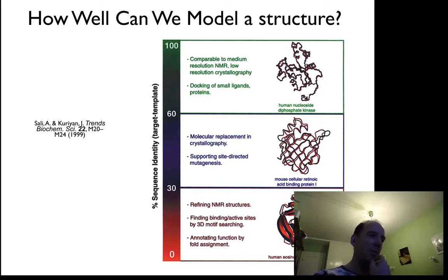At lower level, you're more having an idea about functional ideas. You can get an idea of how things look like. You can look at the support of site-directed mutagenesis, et cetera. And if you have even lower sequence identity, you are more questioning about finding overall functions and particular variations of it. And you can use it for annotating functions by fold assignments.